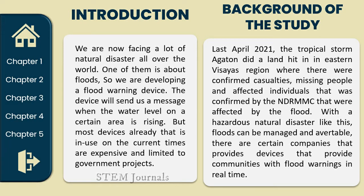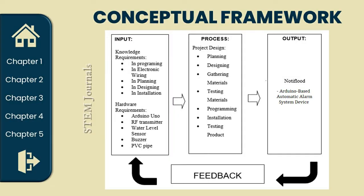Let's proceed to the conceptual framework. Here in the conceptual framework, you can find the IPO — input, process, and output of our project. For input, or what we need before constructing our product: we need knowledge in programming, since our project is Arduino-based, and we need to create code to run our Arduino based on our preferred functionality. Second, we need knowledge in electronic wiring to connect our sensors, and in planning how our prototype will work, and in designing our casing.